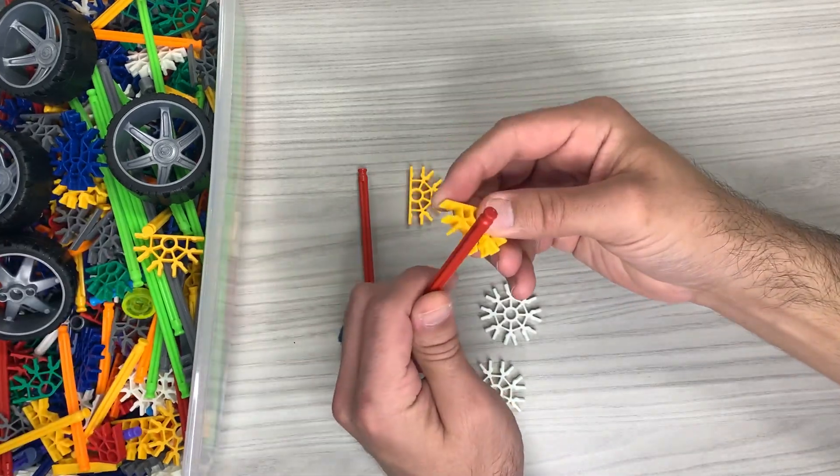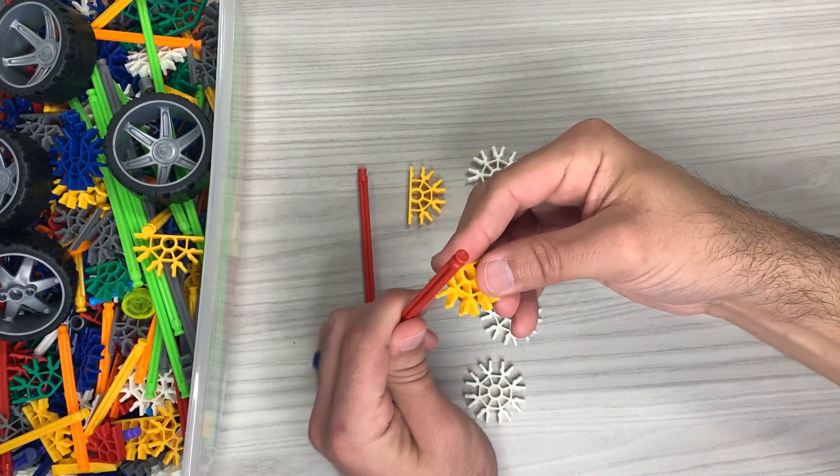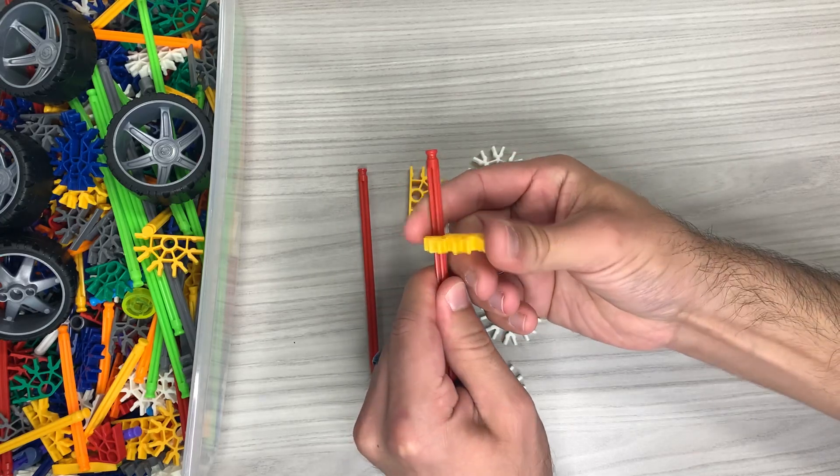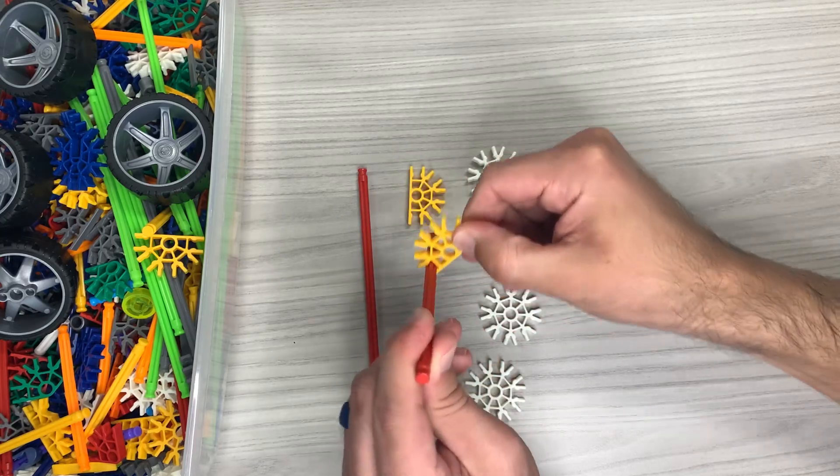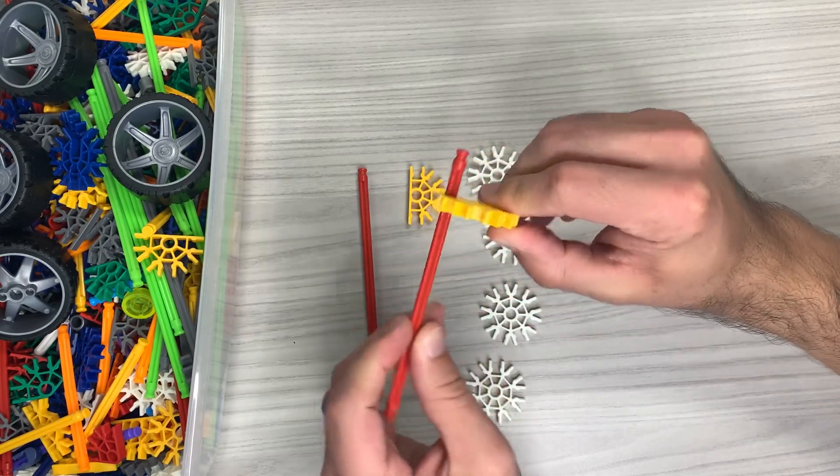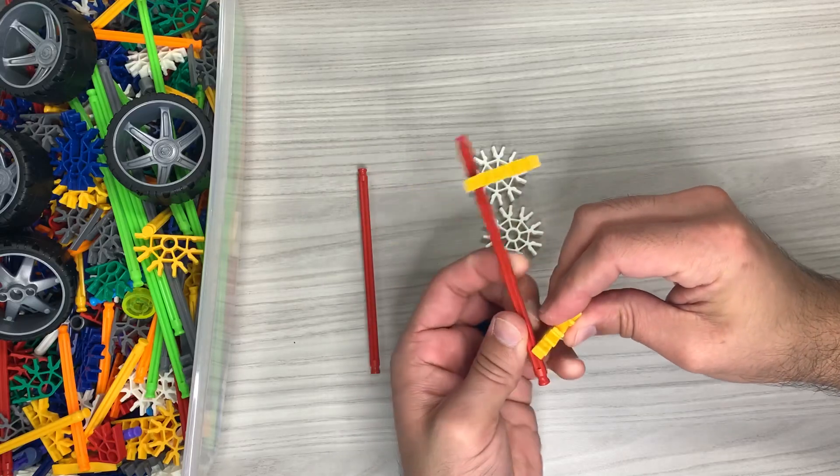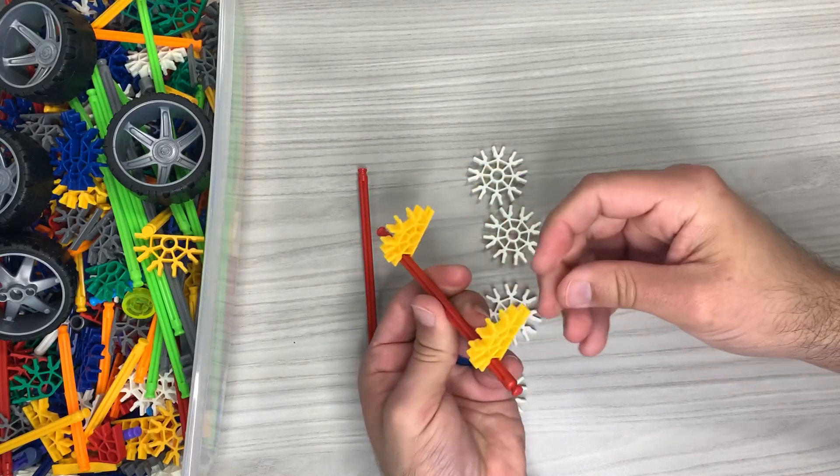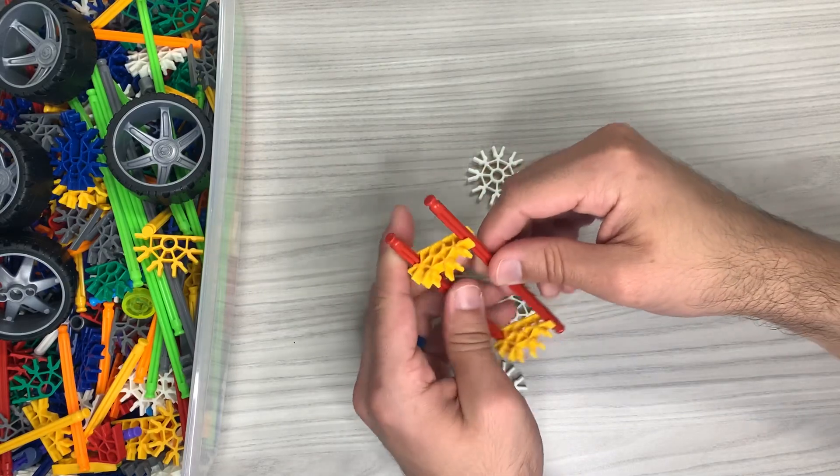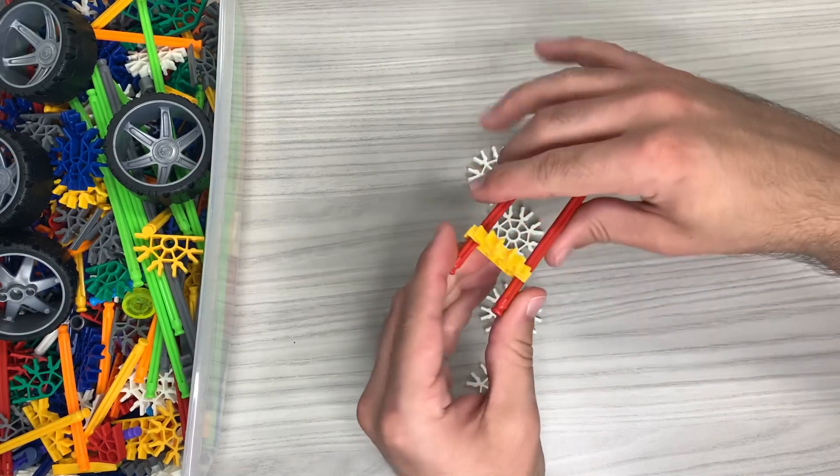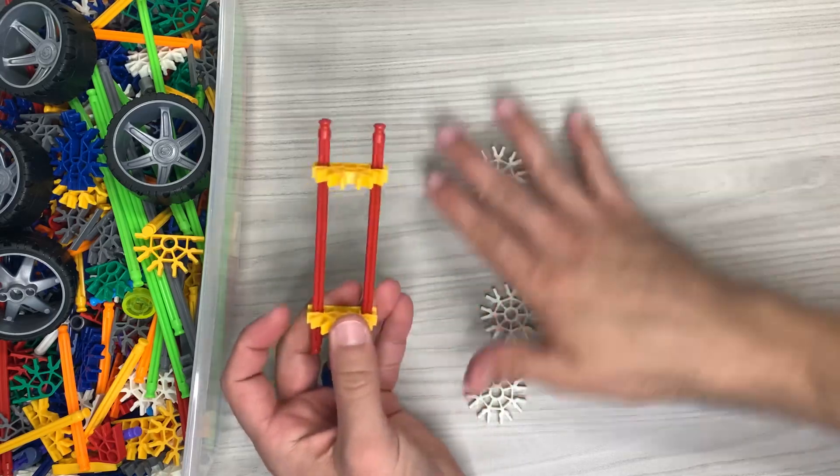First things first, we are going to connect these red rods to the yellow connectors but we're going to do it sideways. We're going to snap them on make sure that they're able to slide like that. Snap on the second one in the same direction. Then snap the other red rod on the side there, another one on the side there.